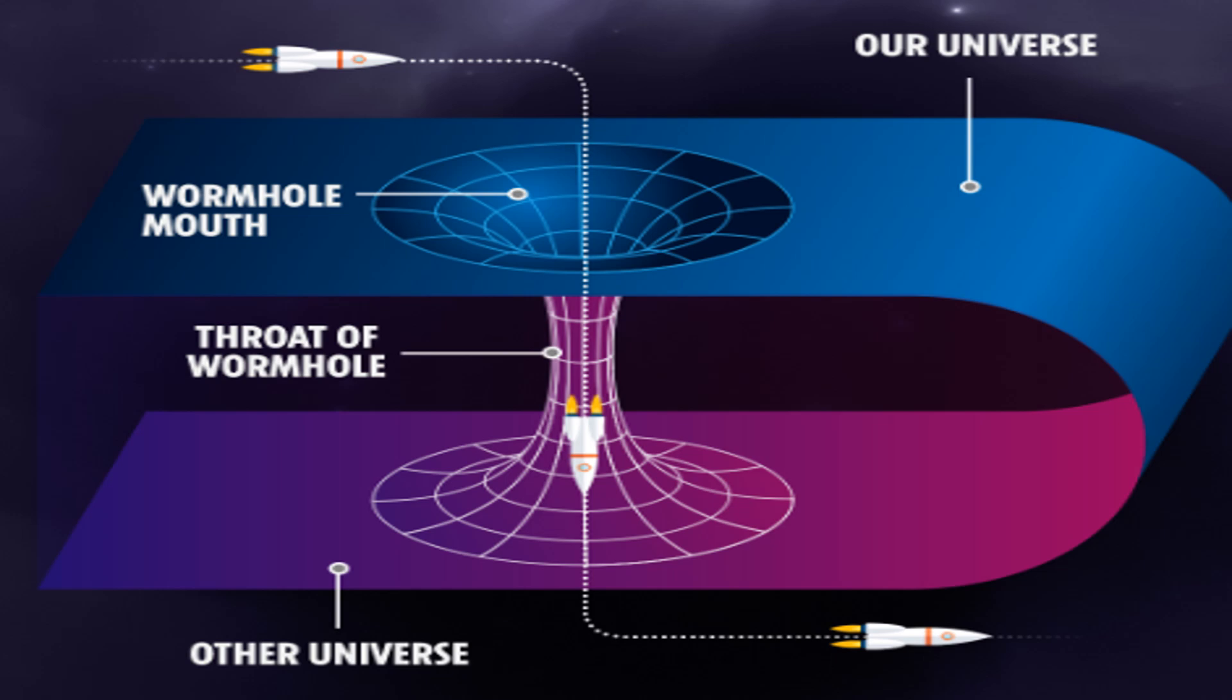If a stable, traversable wormhole could be created, it would revolutionize space travel by allowing instantaneous journeys between distant regions of the universe. This could enable exploration and colonization of far-off planets and stars, effectively bypassing the light speed limit set by special relativity. I'm not all for colonization, I'm just talking about what the potentials would be and how maybe certain governments of the world would view it.